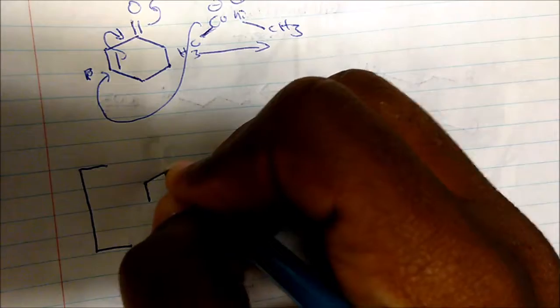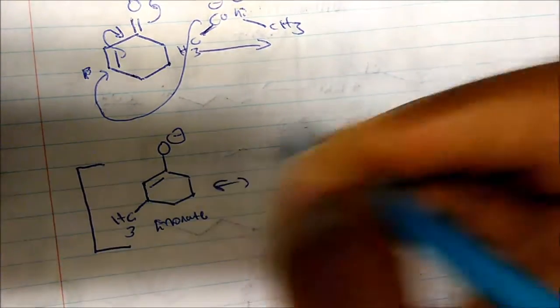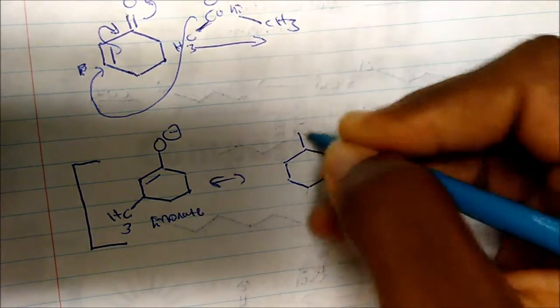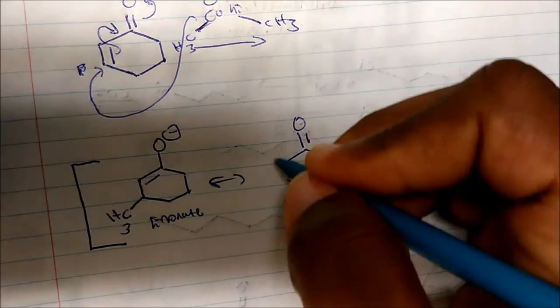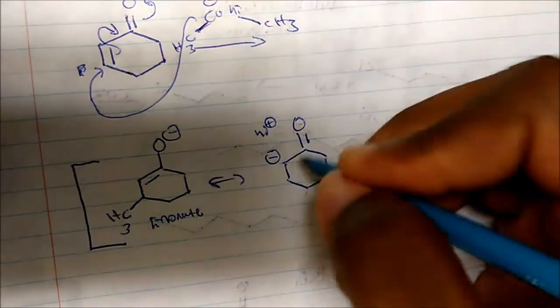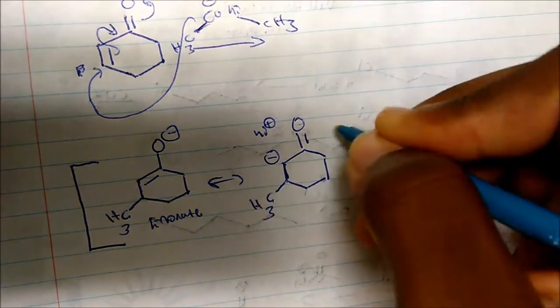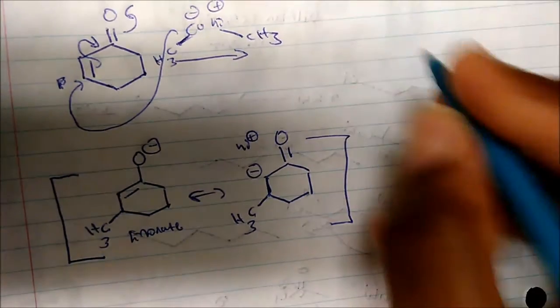We form something that looks like the enolate. This is in equilibrium with the ketone form — we can bring these electrons down to reform the ketone, giving a negative charge on the oxygen. Lithium with its positive charge balances it out, and we still have our CH3 group. These resonance forms are in equilibrium. We then simply do an acid workup.